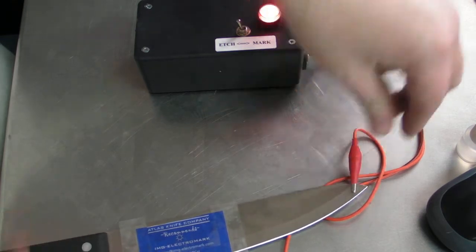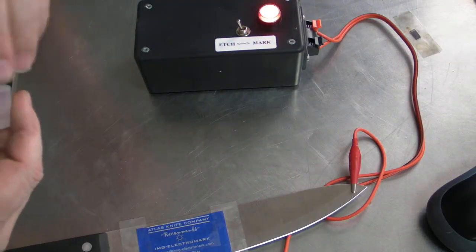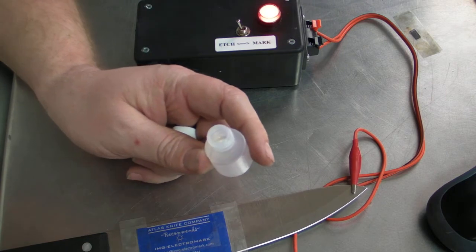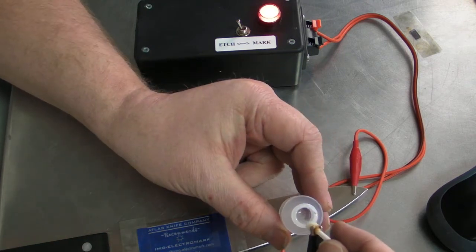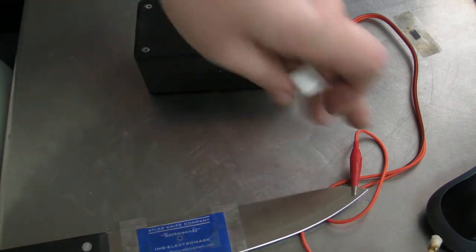Clip the red to the blade. Put a little bit of our etchant solution here on the Q-tip. Wipe off any excess. It doesn't take a lot.